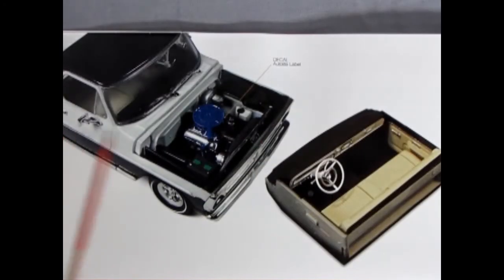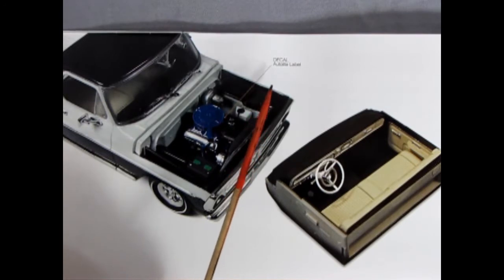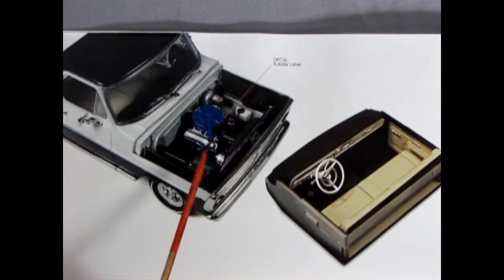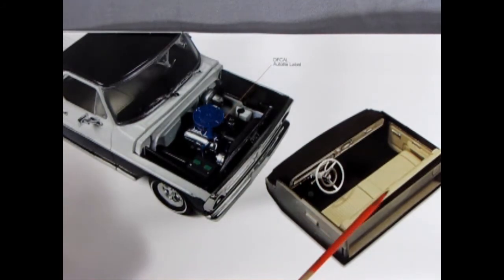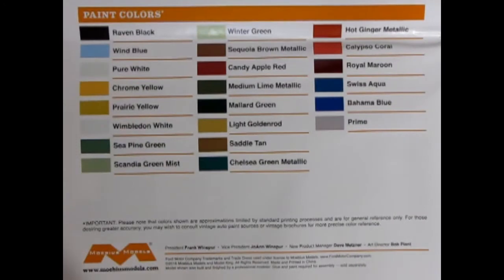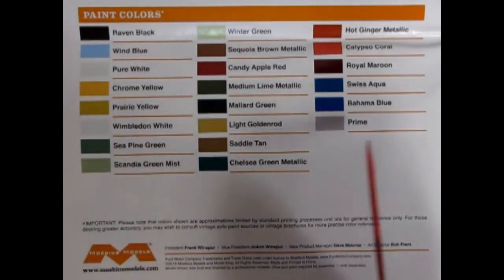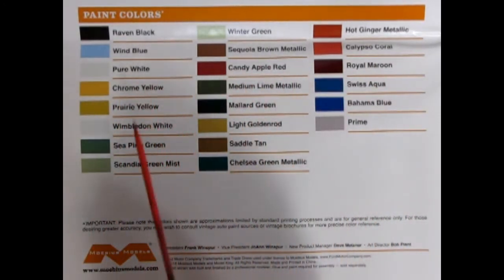And here we have a nice photograph of our decal for our Autolite label which goes in on our air cleaner. You can also see the nice interior paint scheme that they've given this model. Finally, Mobius has given us a paint color chart in actual color so that we can see all the options that came in the 1972 Ford Sport Custom pickup truck.